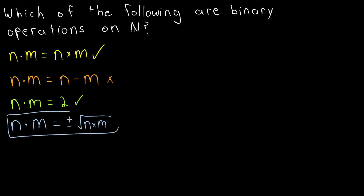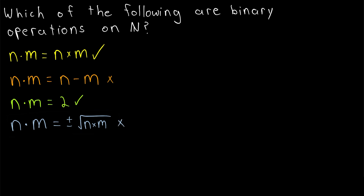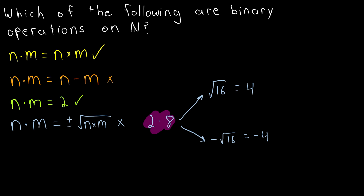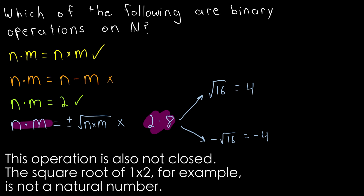The last example in this question: this operation takes two natural numbers and spits out plus or minus the square root of their product. This is certainly not a binary operation, because it isn't a function. If we combine 2 and 8 under this operation, we get the positive square root of 16, which is 4. However, we would also get the negative square root of 16, which is negative 4. Since each input does not get exactly one output, this operation is not a function, and so it is not a binary operation.